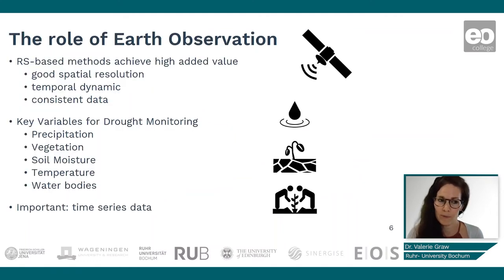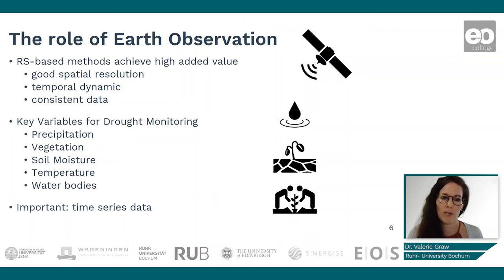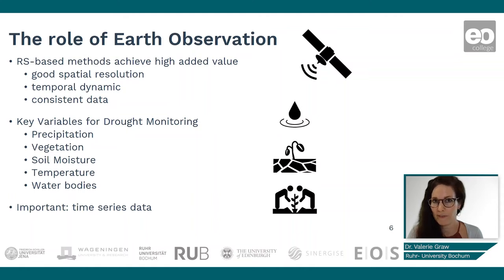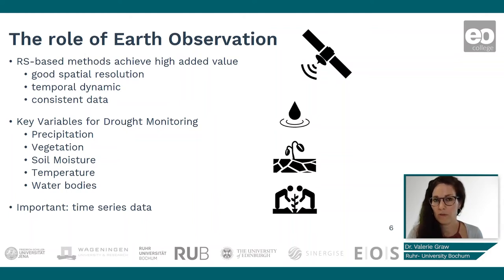What is the role of earth observation? With remote sensing, we have the possibility to achieve high added value for drought monitoring. We have good spatial resolution and temporal dynamics — often images in a dense time series with a consistent revisiting time. Key variables for drought monitoring are mostly precipitation, since a lack of rainfall gives us the first sign that there might be a hazard.